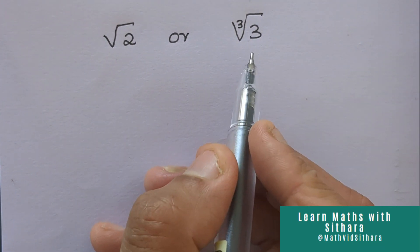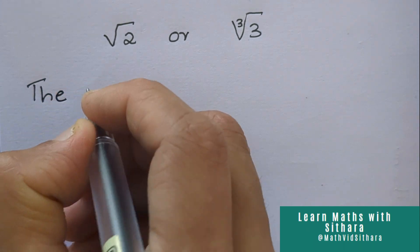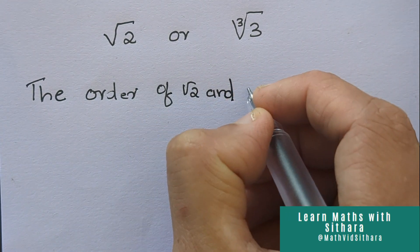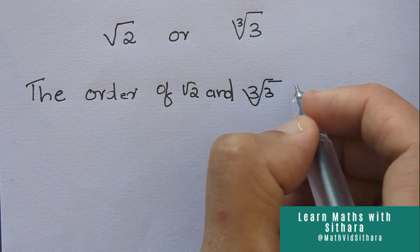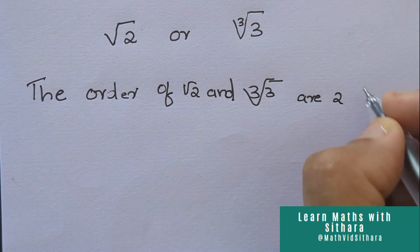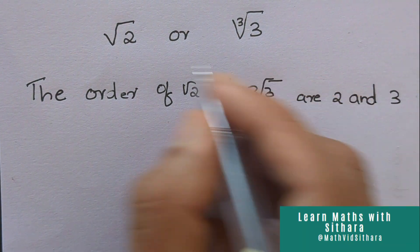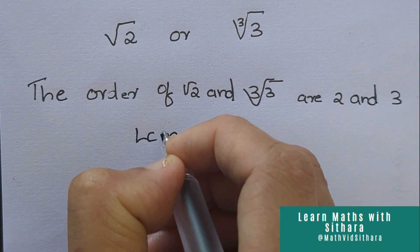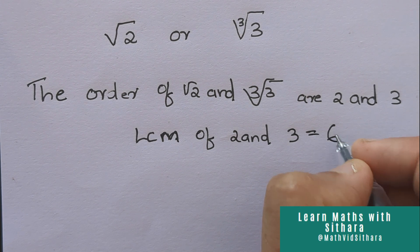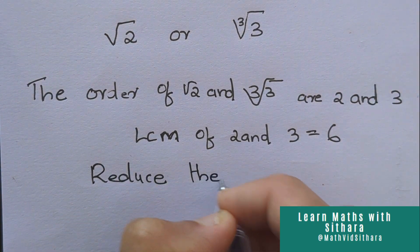We have to find out which number is larger: is it root 2 or cube root of 3? The orders of root 2 and cube root of 3 are 2 and 3 respectively. Next, we find the LCM of 2 and 3, which is 6. The next step is to reduce the order of both numbers to 6.